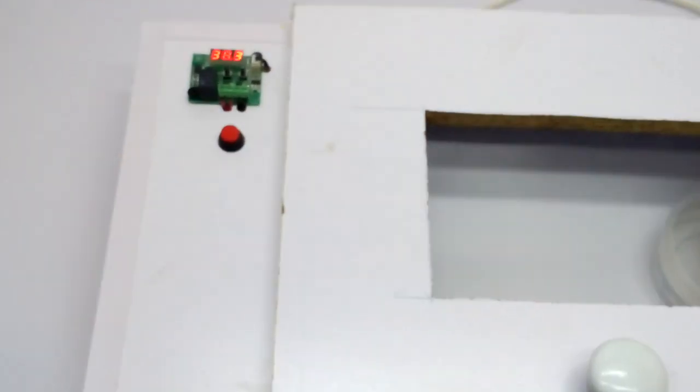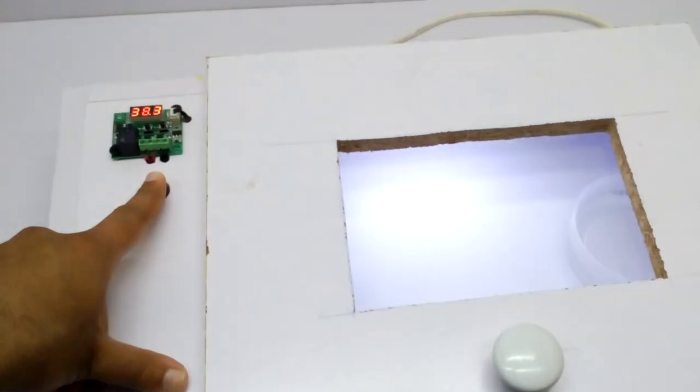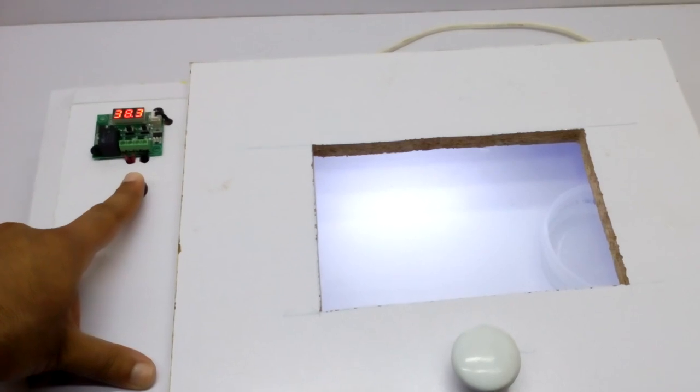Here is a button for the LED bulb. If we press it, it is going to turn on and we can see the progress of the eggs inside. It is an observation window, so it is very good.